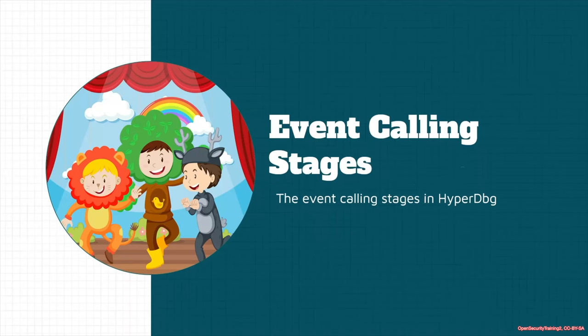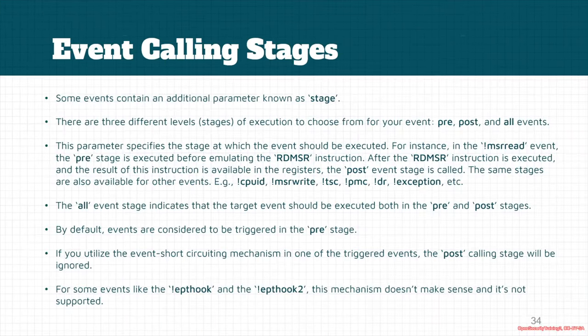Another mechanism in HyperDbg is event calling stages, or event stages. Some of the events in HyperDbg contain an additional parameter known as stage. There are three different levels or stages of execution which we can use: pre, post, and all. This stage parameter specifies at which stage the event should be triggered.